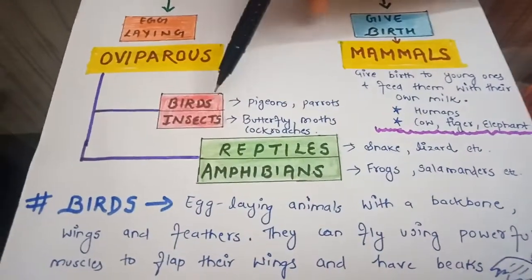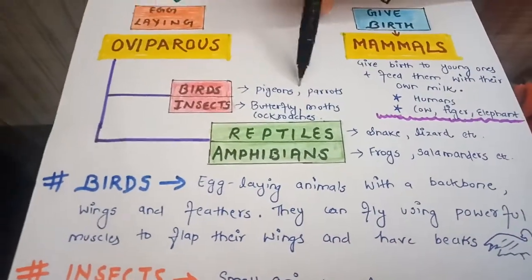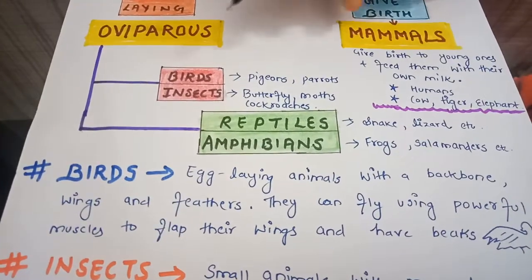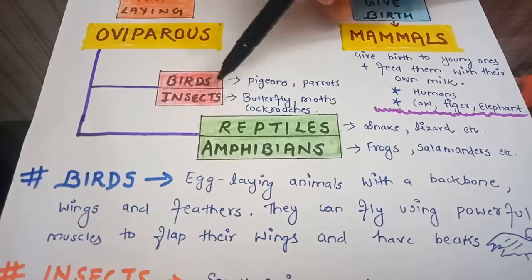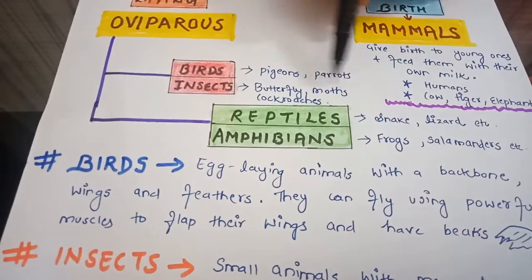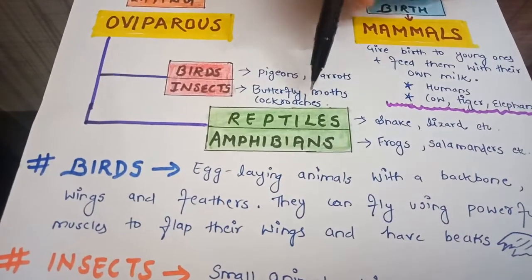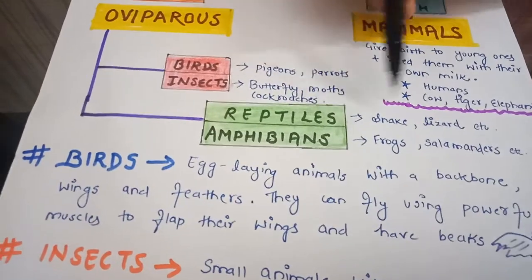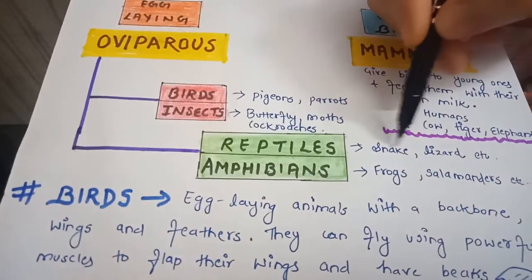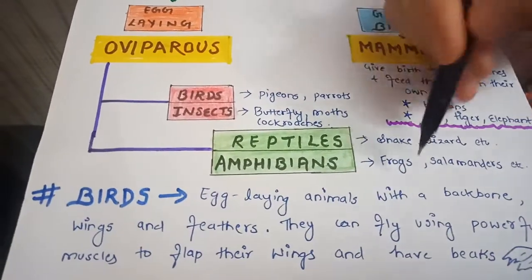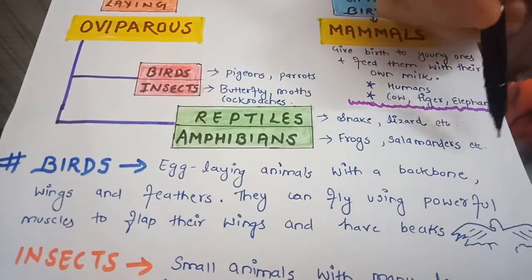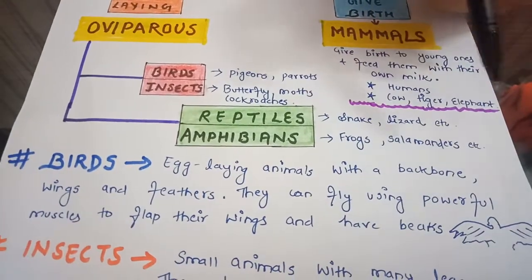Examples of birds include pigeons, parrots, and sparrows. For insects: butterfly, moths, and cockroaches. In reptiles: snake and lizard. And in amphibians: frogs, salamanders, toads, and so on.